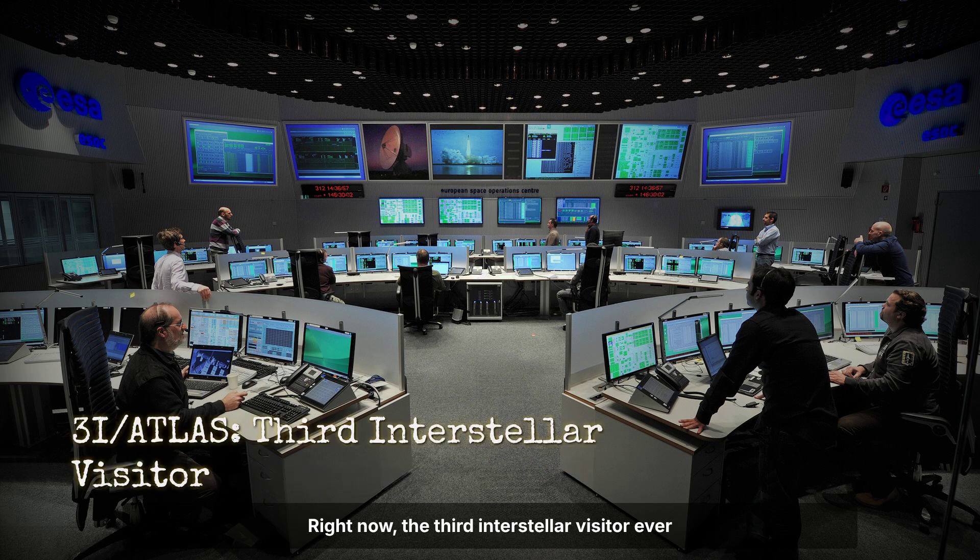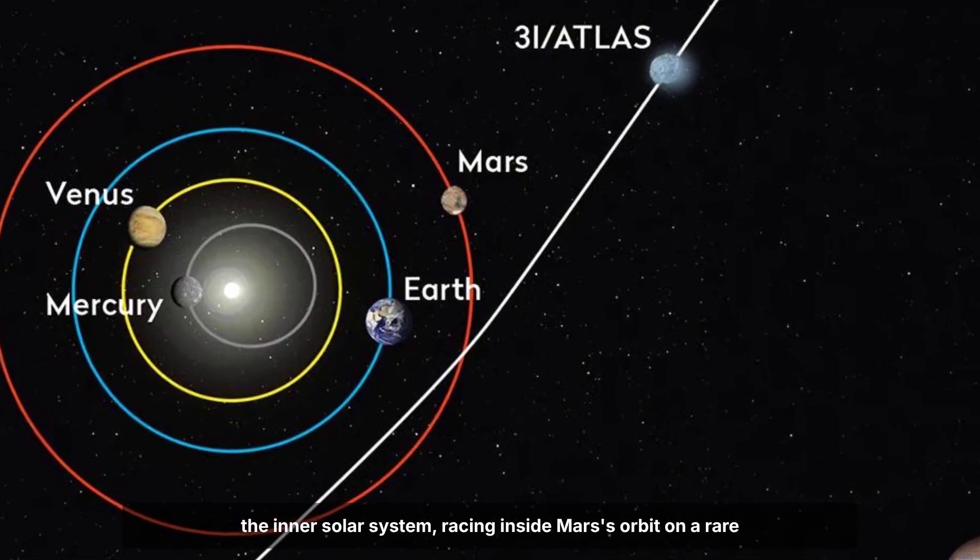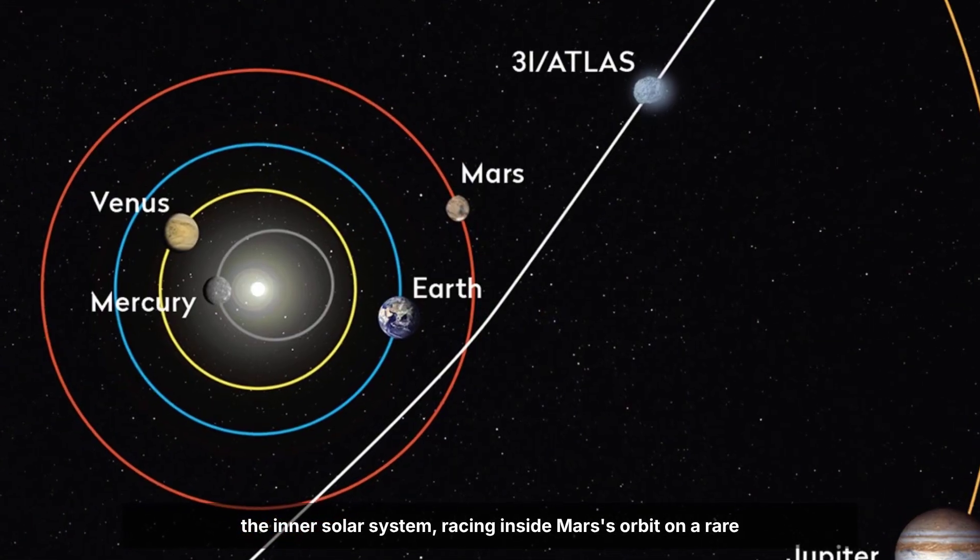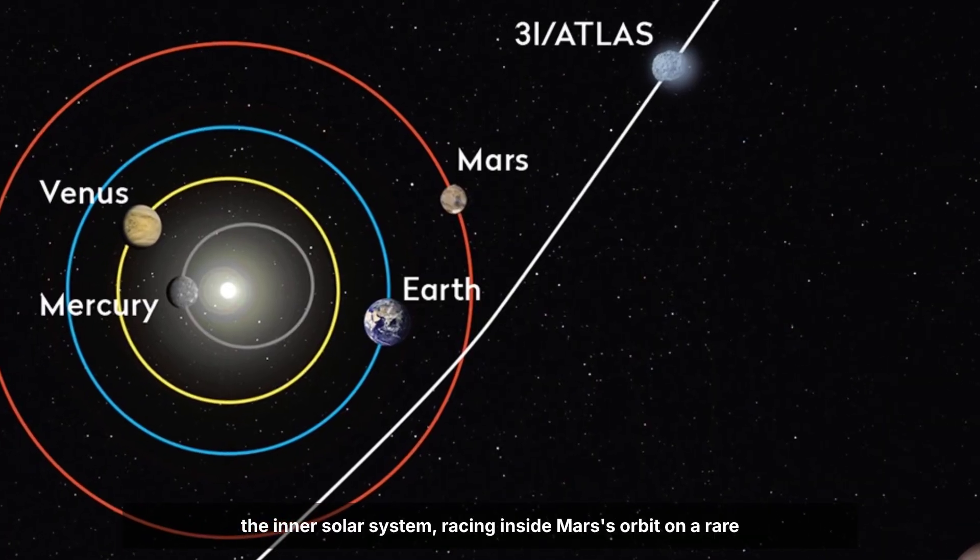Right now, the third interstellar visitor ever detected, 3I-Atlas, is careening straight through the inner solar system, racing inside Mars' orbit on a rare retrograde path.